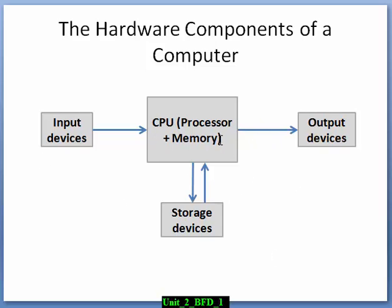The heart of the computer is a CPU. Then you have input devices which send signals, send data to the CPU. And you get output devices which take data from the CPU and show it to the user, either human or another machine. Storage devices can feed data into the CPU and can accept data from the CPU. But they are called storage devices, not input or output.